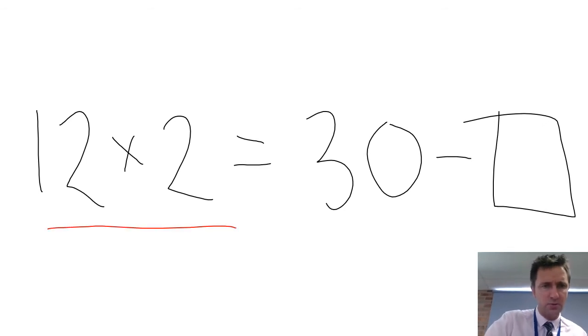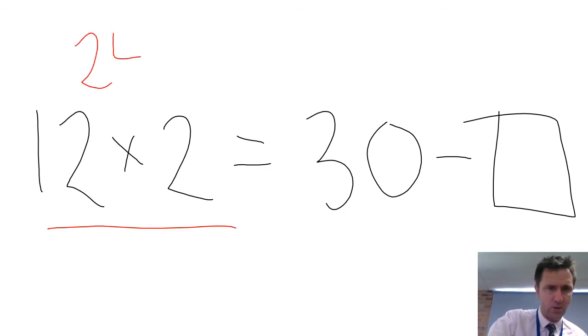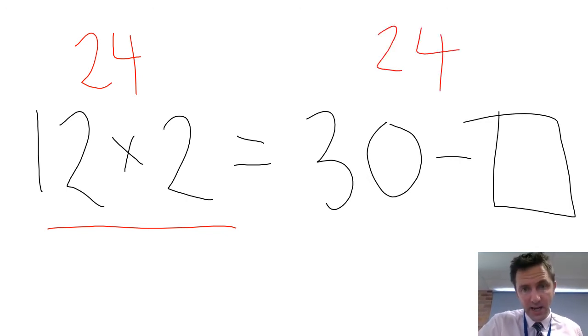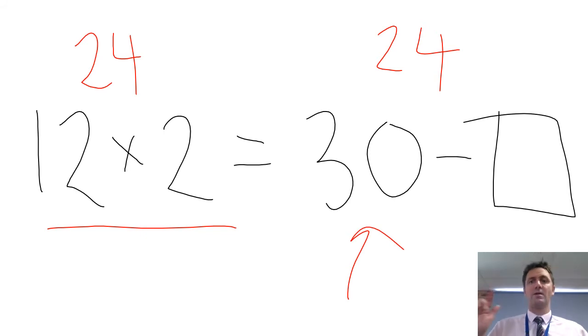12 times 2 equals what? Well, that equals 24. Now that means over here it's going to equal 24. So what do you take away from 30 to equal 24? I hope you thought it was 6.